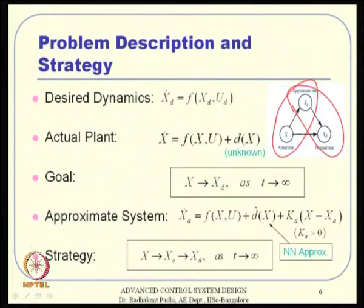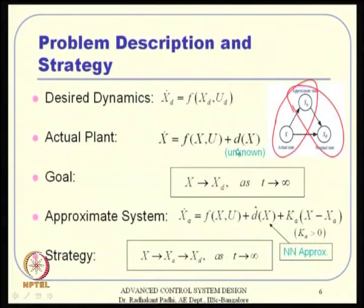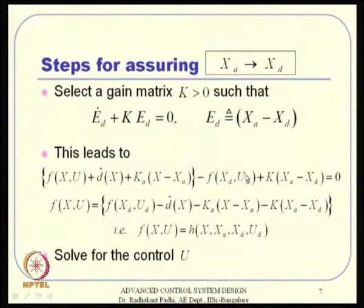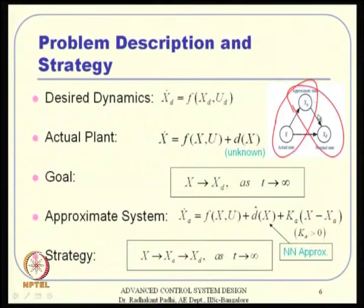As soon as x goes to x_a, the term k_a·(x - x_a) is zero, so d is effectively d̂(x), meaning the identification is working properly. We have to assure both loops simultaneously. Let us first discuss: assuming x has gone to x_a, how do we ensure x_a goes to x_d? After that we will address ensuring x goes to x_a.